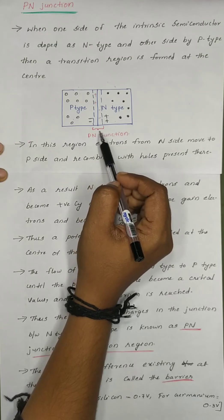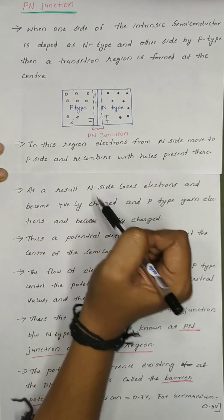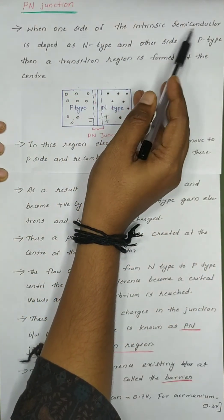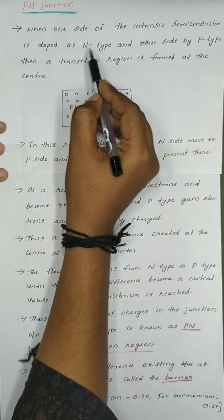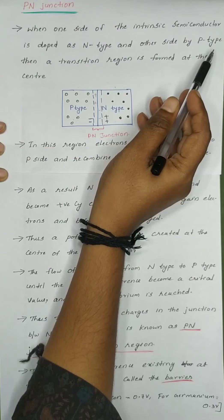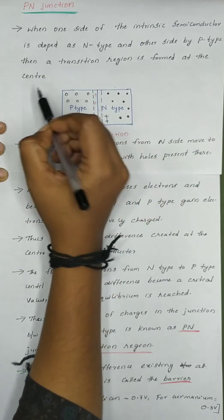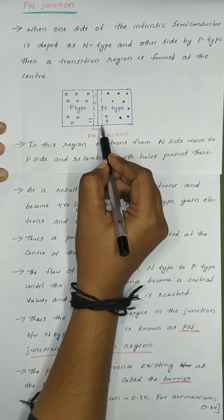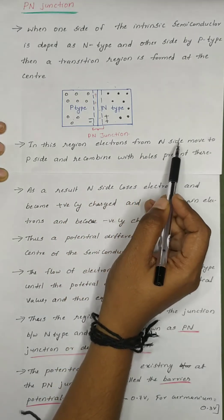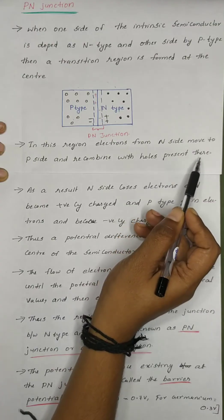We call it the Depletion Region. When one side of the intrinsic semiconductor is doped as N-type and the other side as P-type, a transition region is formed at the center. In this region, electrons from the N-side move to the P-side and recombine with holes present there.